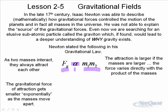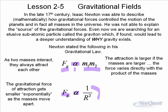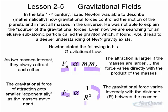Newton also said that the gravitational force of attraction gets smaller exponentially as the masses move apart. The gravitational force is proportional to the inverse — as the distance between two masses gets larger, the force gets smaller. If you double the distance, you would decrease the gravitational force by 1 over 4. If you tripled the distance, you would decrease the gravitational force by 1 over 3 squared, which is 1 ninth.